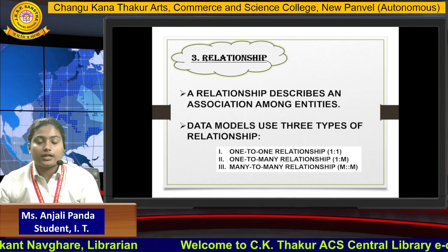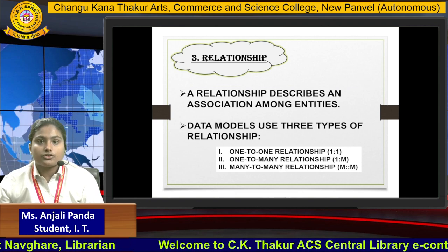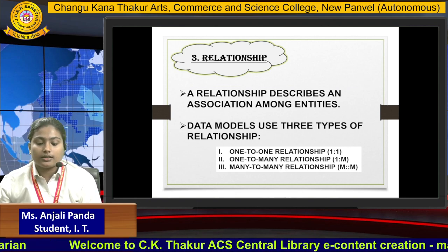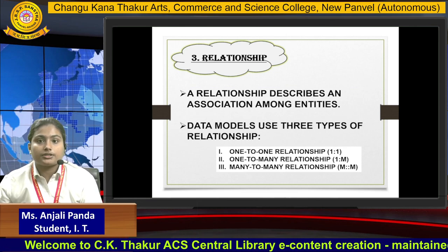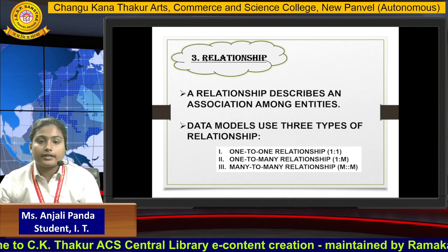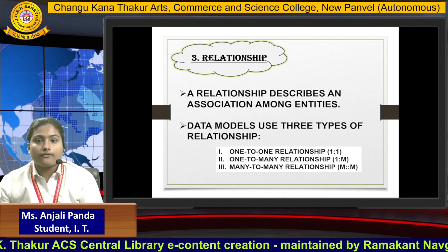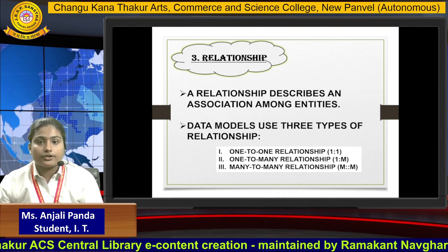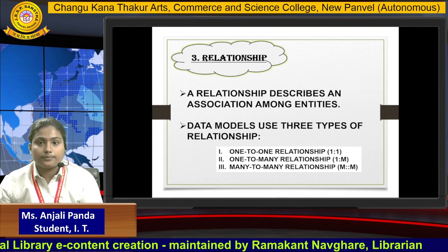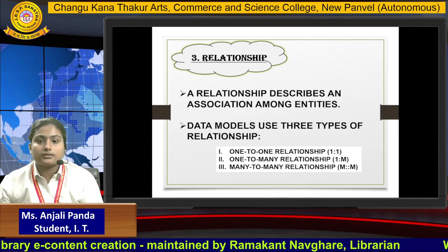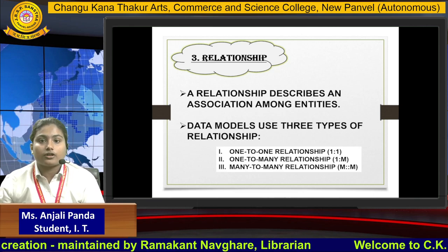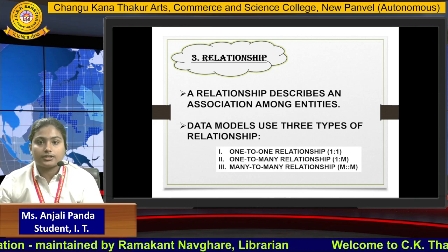Next is relationship. What is relationship? A relationship describes an association among entities. There are three types of relationship: first is one-to-one relationship, second is one-to-many relationship, and third is many-to-many relationship.